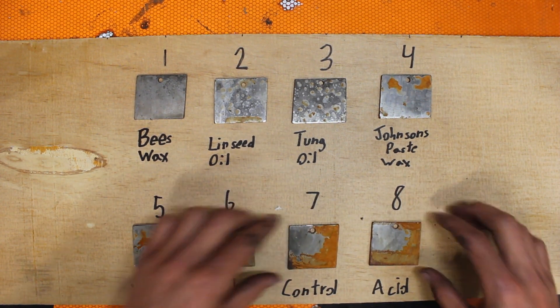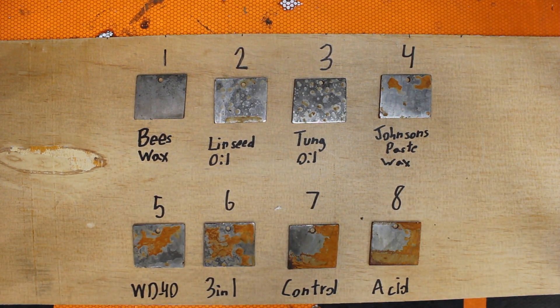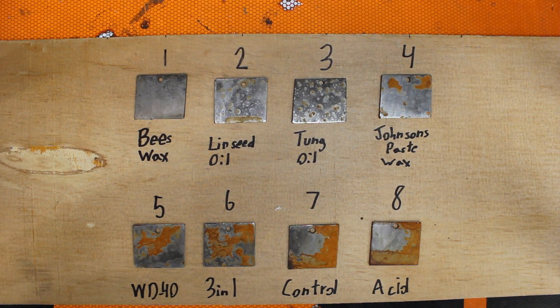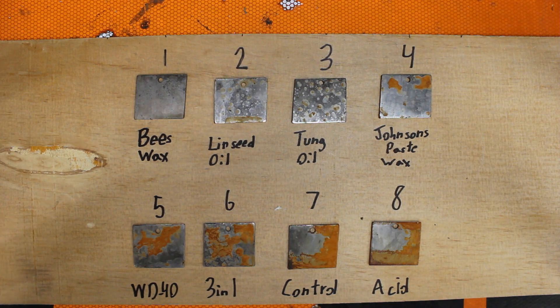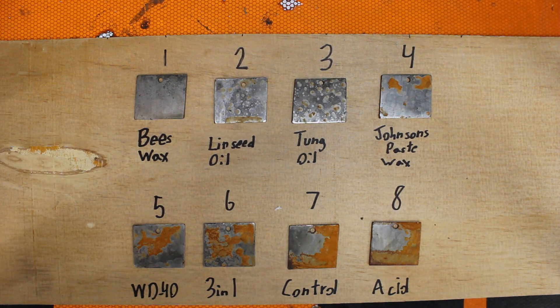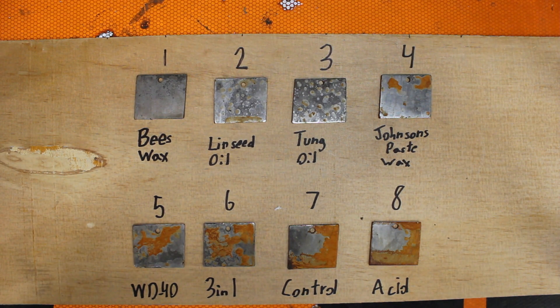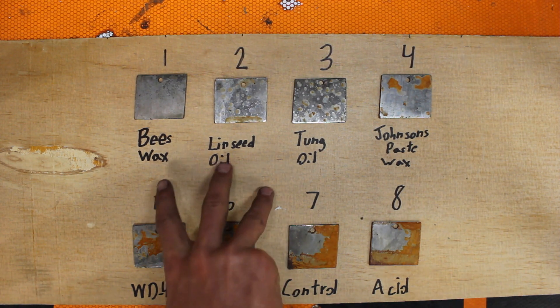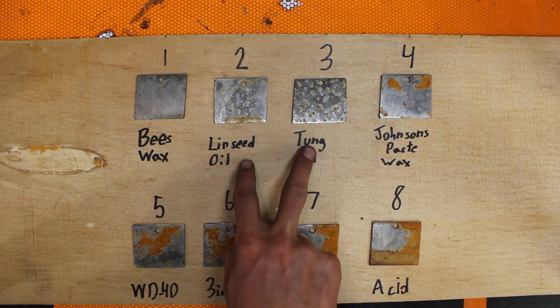So that's my rankings. Comment below what you guys think, what you guys would have done, any differences, and also what your best rust preventer that you found because I found before I've done another video. In my last video, tung oil actually performed the best and beeswax did very good, but in this one beeswax did a little better. So my personal favorites are these three here.